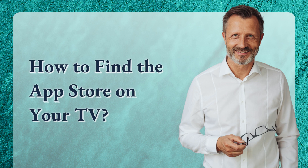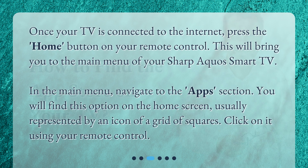How to find the App Store on your TV? Once your TV is connected to the internet, press the Home button on your remote control. This will bring you to the main menu of your Sharp Aquos Smart TV. In the main menu, navigate to the Apps section. You will find this option on the home screen, usually represented by an icon of a grid of squares. Click on it using your remote control.